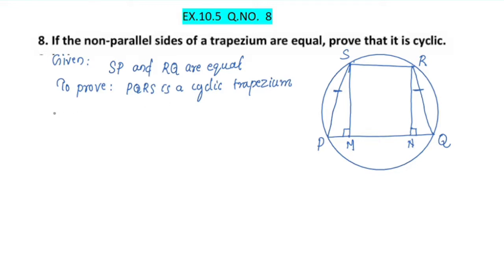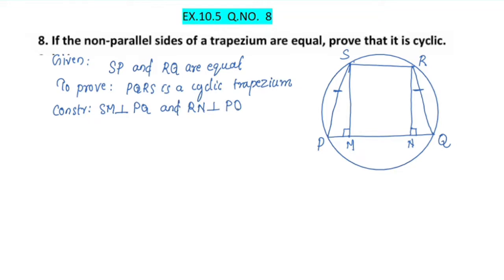Now we have done a construction. The construction is: SM perpendicular to PQ and RN perpendicular to PQ.